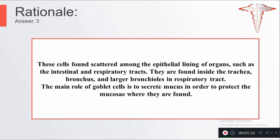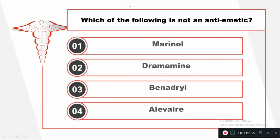Rationale: Goblet cells are found scattered among the epithelial lining of organs such as the intestinal and respiratory tract. They are found inside the trachea, bronchus, and larger bronchioles. The main role of goblet cells is to secrete mucus in order to protect the mucosa where they are found.